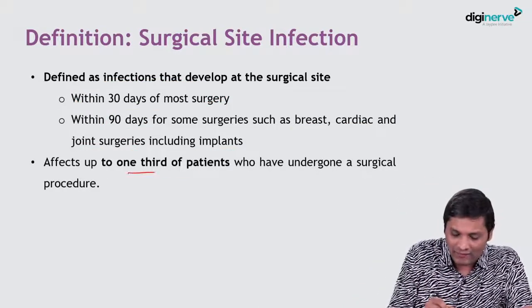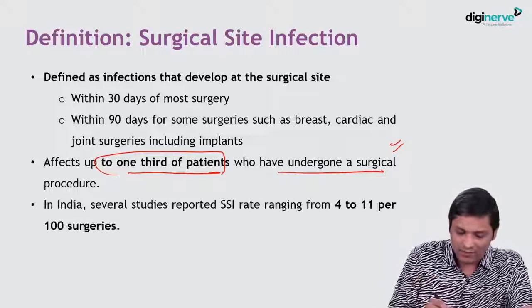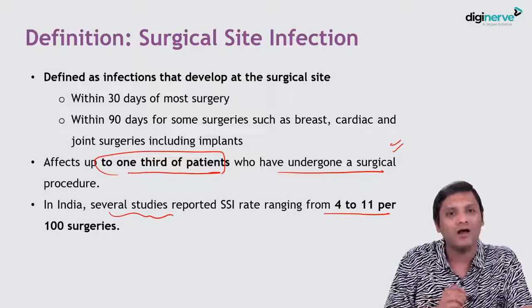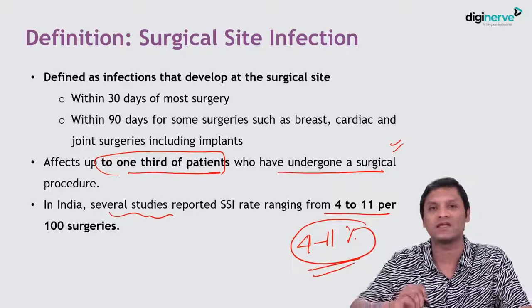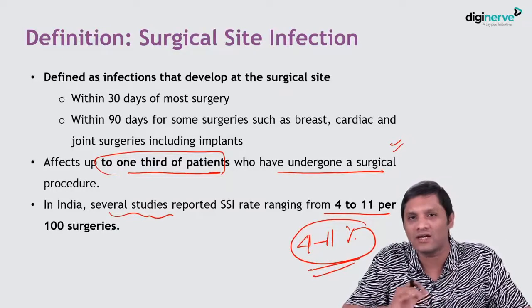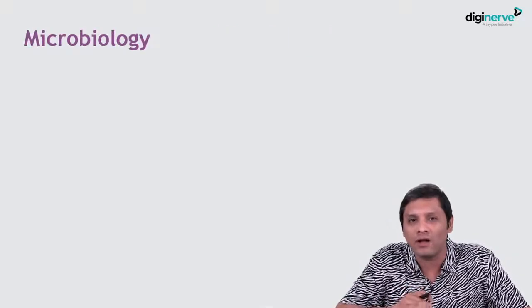SSI can affect up to one third of patients who have undergone surgical procedures if appropriate control measures are not taken. In India, various studies have reported SSI rates ranging from 4 to 11 per 100 surgeries. SSI is always expressed per 100 surgeries, and may go up to one third of patients without appropriate control measures.